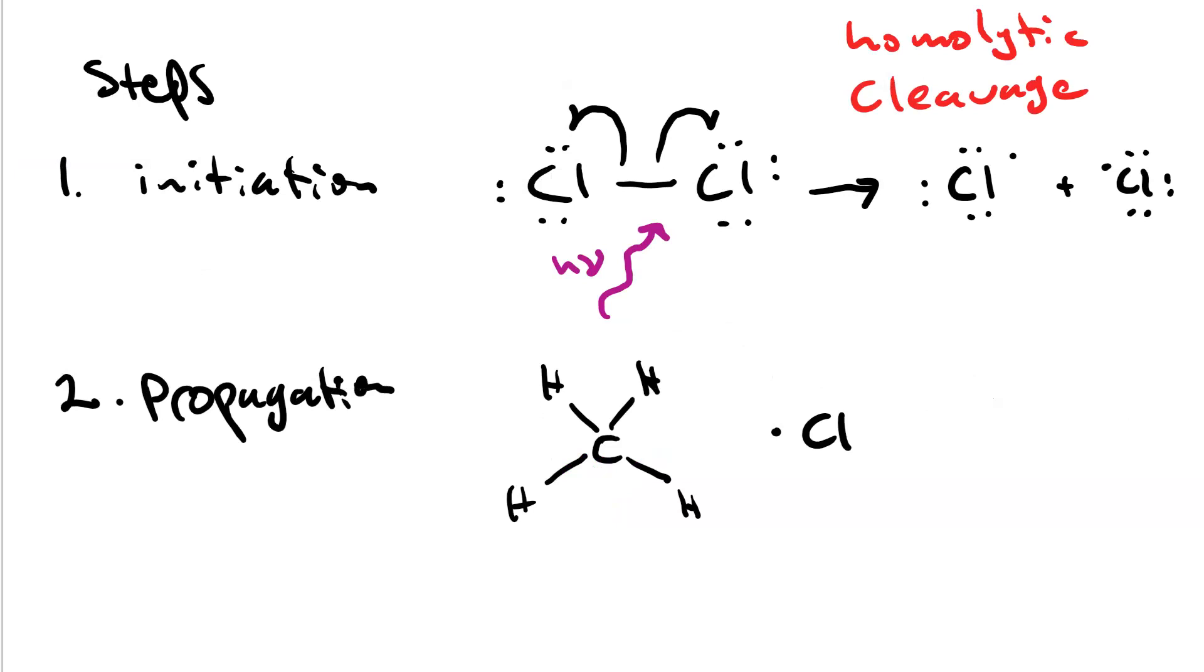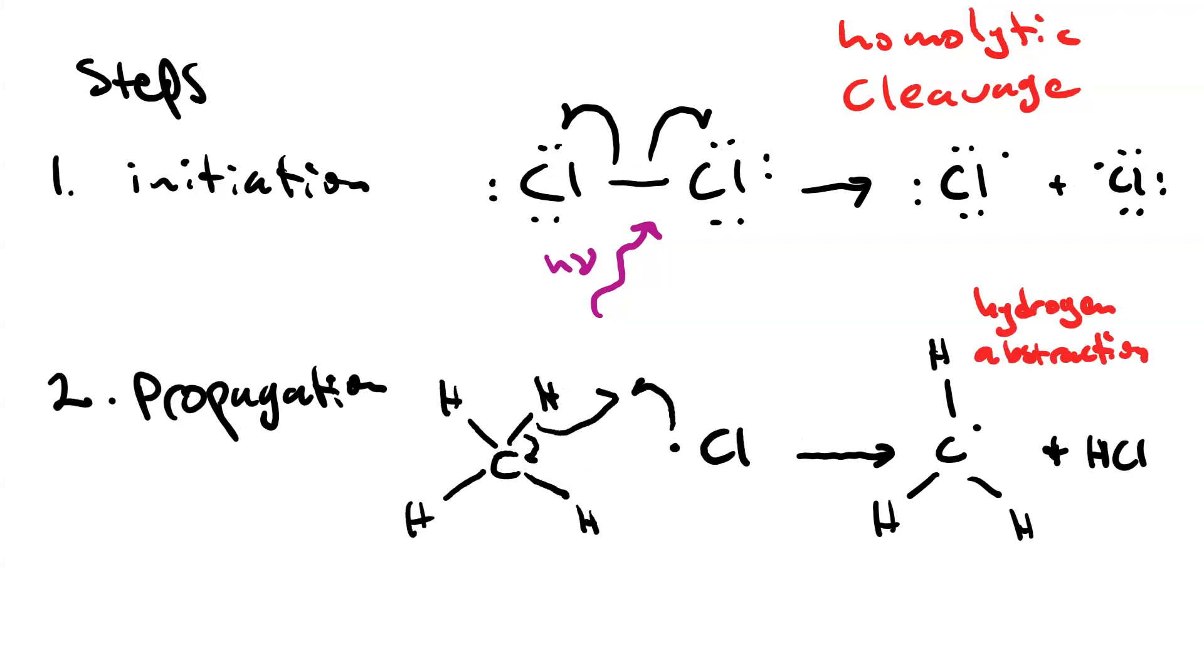In our first propagation step, one of our chlorine radicals abstracts a hydrogen from our methane. This hydrogen abstraction results in a methyl radical and hydrochloric acid.